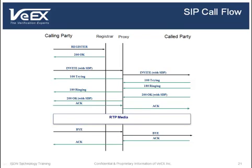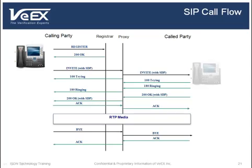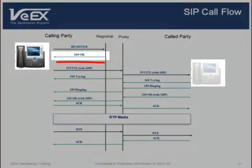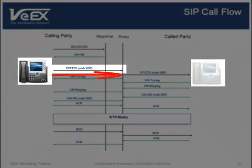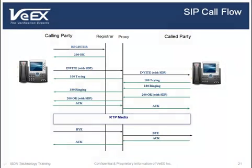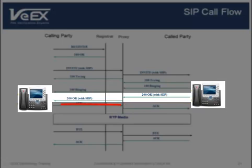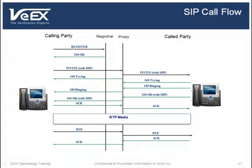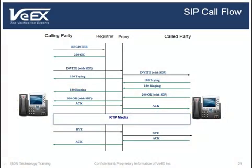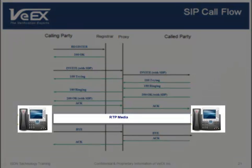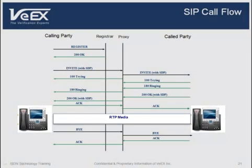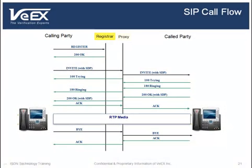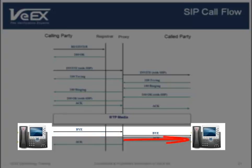The chart here shows a typical SIP call flow between two endpoints. First, the registrar receives the register request and sends a response. Then the caller sends an invite with SDP embedded in the SIP message to the proxy, which forwards it to the callee after the callee has been found. The second message is the OK response from the called party, after which the calling party returns a confirmation message. The call has been established, and speech media within the RTP payloads are exchanged between the two callers. Note that this call flow involves a registrar and a proxy, although their functions are often combined into a single server. At the end of the call, whoever hangs up first will send a BYE message to the other party, who in turn acknowledges it.